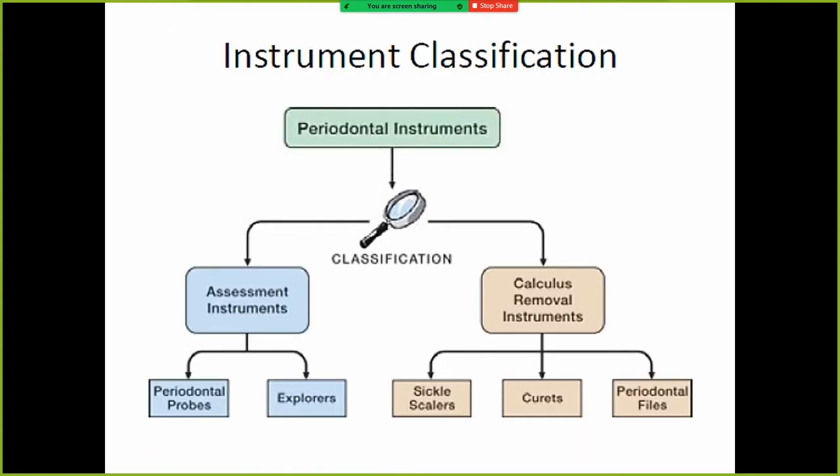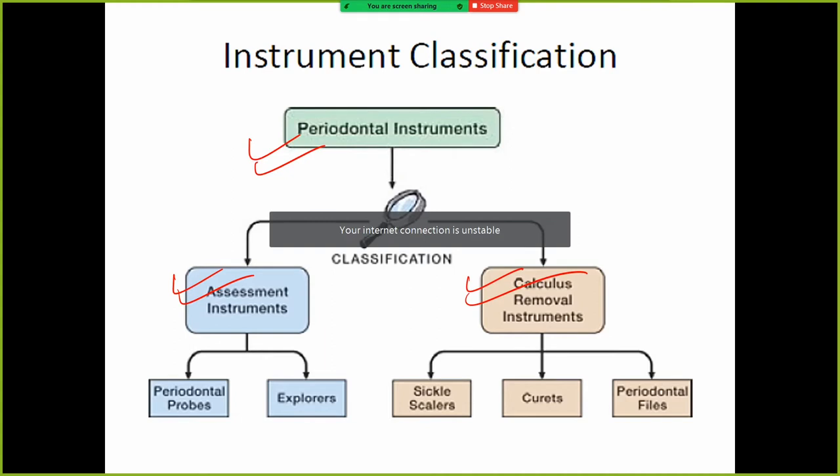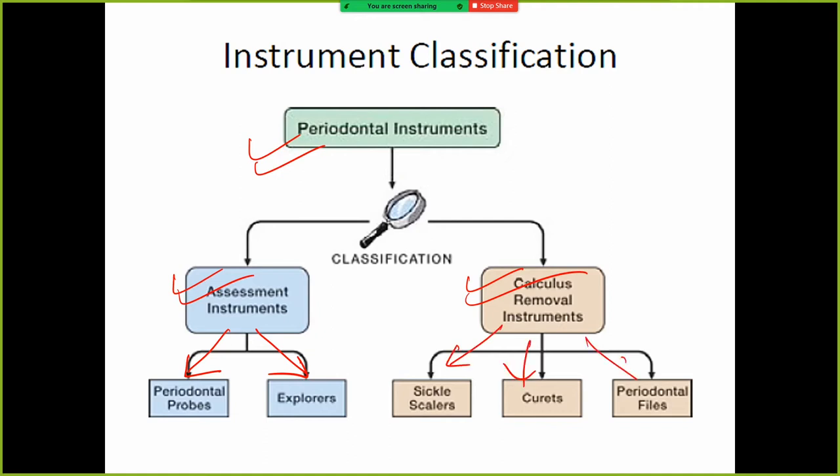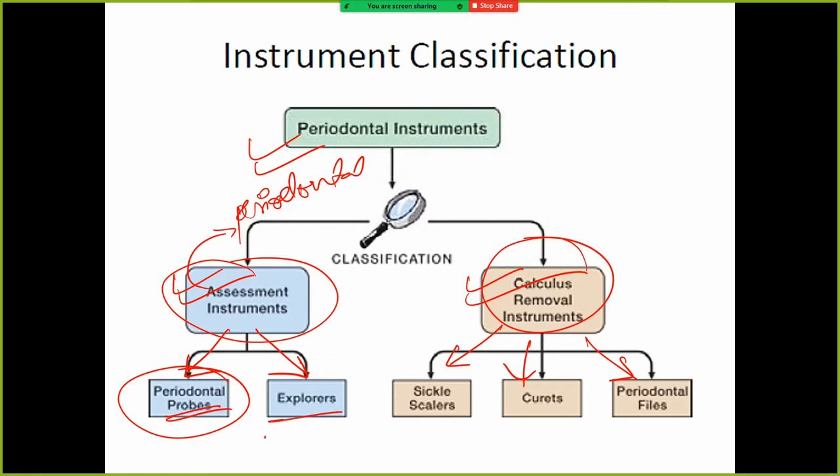Instrument classification: Periodontal instruments can be classified as assessment instruments and calculus removal instruments. Assessment instruments include periodontal probes and explorers. Calculus removal - we know from third year and final year - sickle scalers, curets, periodontal files. For assessment, to assess periodontal pocket or gingival health of a patient, we use periodontal probe and explorers.